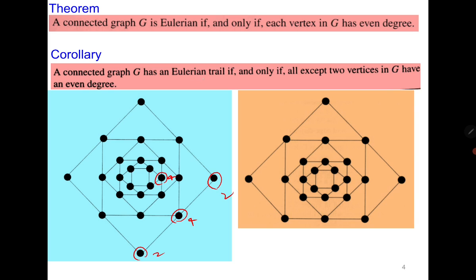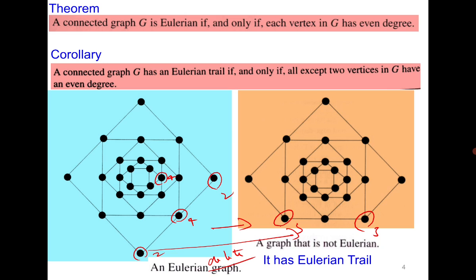A connected graph has an Eulerian trail if and only if all except two vertices in G have an even degree. From this graph, if you move to this graph, you can see that I have only deleted this vertex and therefore there are two vertices of odd degree 3 and 3, while all other vertices have even degree. Therefore the first graph is Eulerian while the second graph has an Eulerian trail. It is not Eulerian but it has an Eulerian trail.